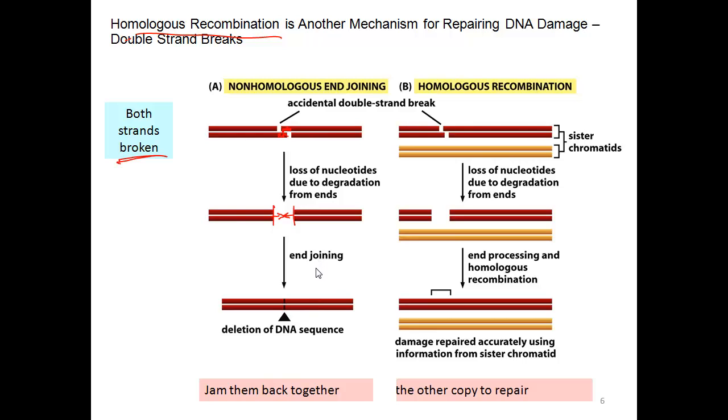While that's better than having a broken chromosome, non-homologous end joining is a last resort. A preferred method is homologous recombination. What's important to remember is that you have two copies of every chromosome—one from your father and one from your mother. The cell will use the other chromosome to guide the repair.